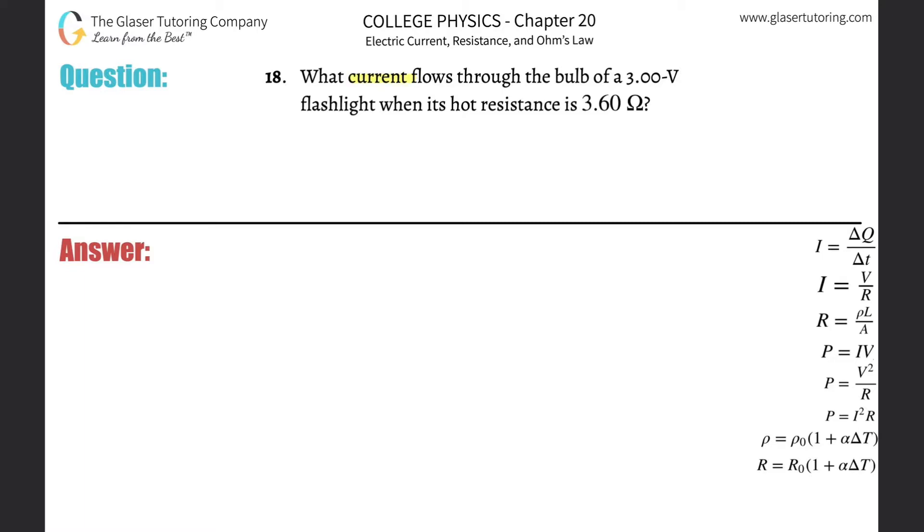Number 18, what current flows through the bulb of a 3 volt flashlight when its hot resistance is 3.6 ohms?